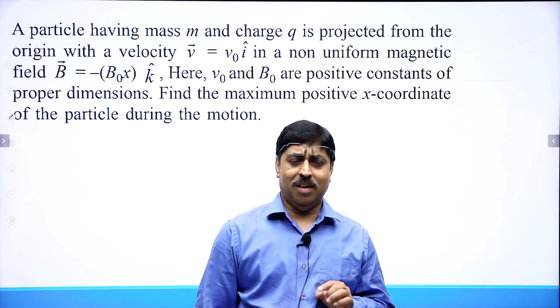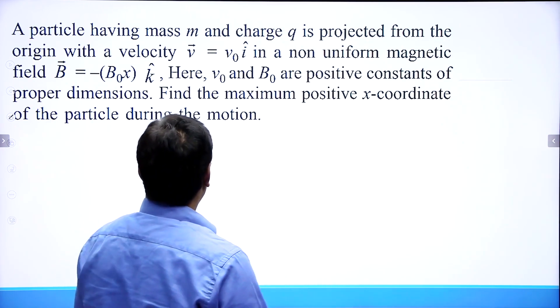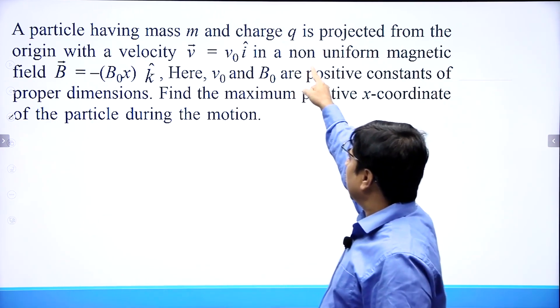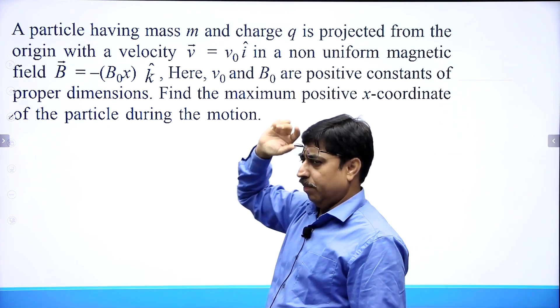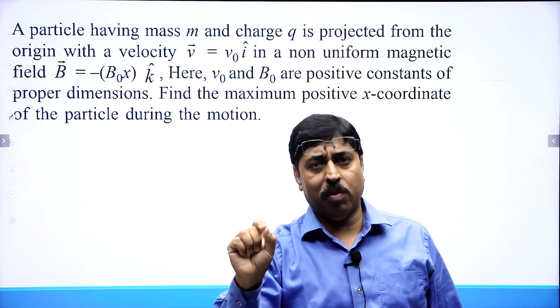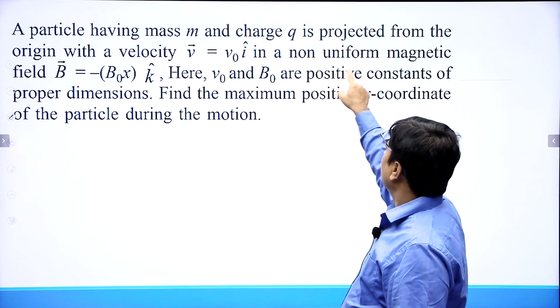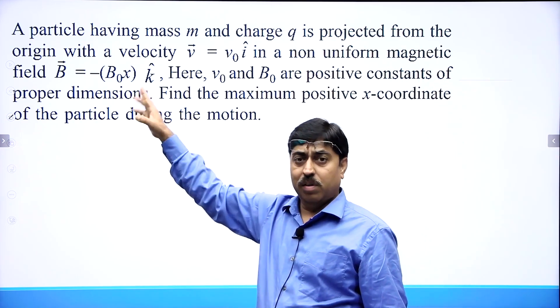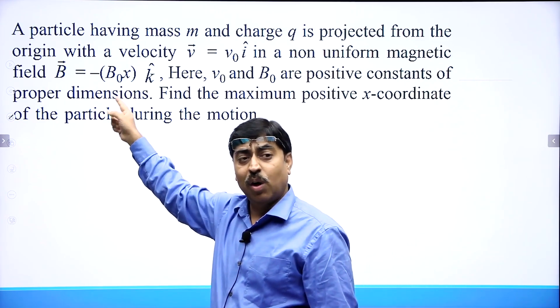It is a difficult question. Let us see how many of you can do it. The question says: a particle having mass m and charge q is projected from the origin with velocity V₀ î, in a non-uniform magnetic field. The magnetic field is not uniform — it is minus B₀x k̂.